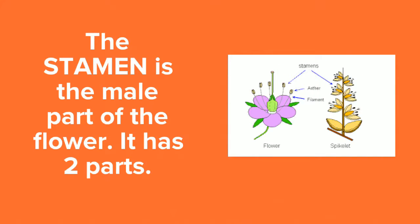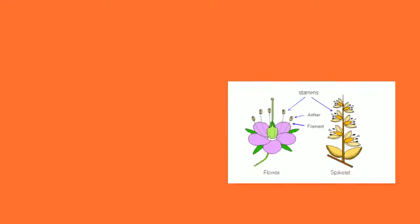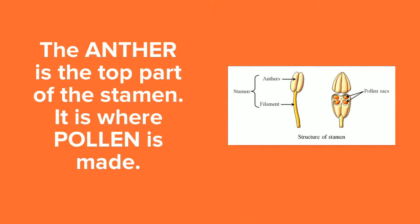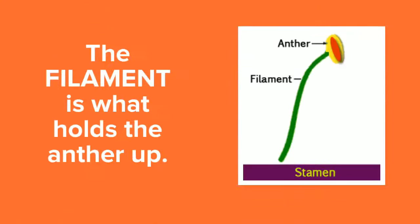The stamen, the male part of the flower, has two parts: the anther and the filament. The anther is the top part of the stamen and that's where pollen is produced. The filament is what holds up the anther — that's the bottom part of the stamen.